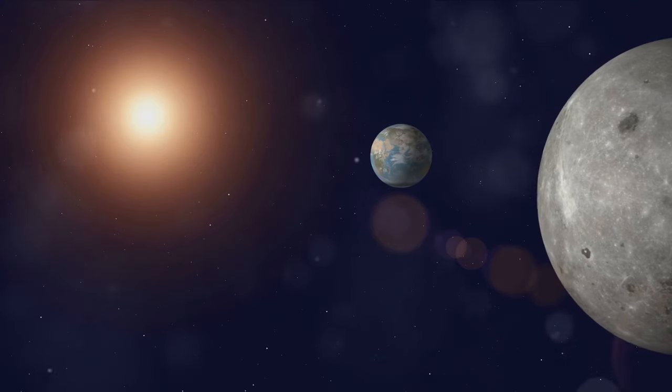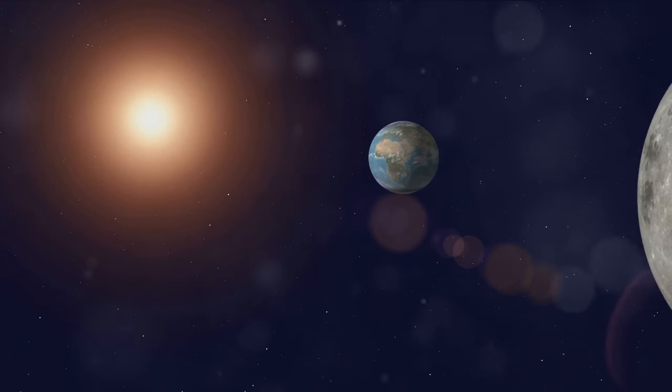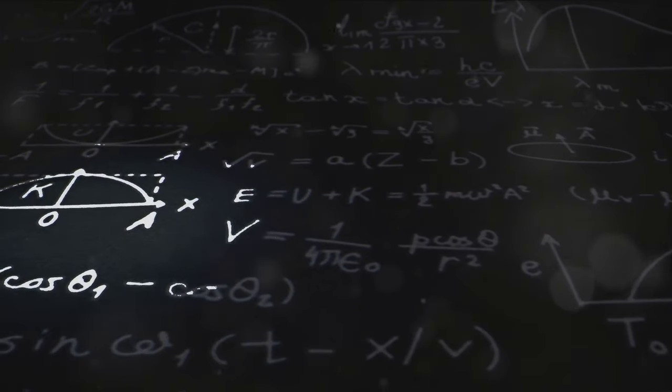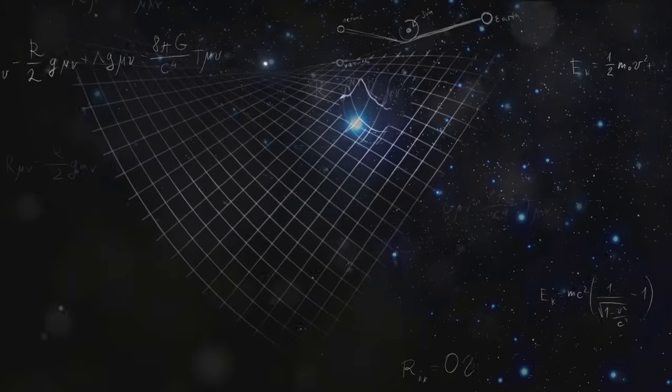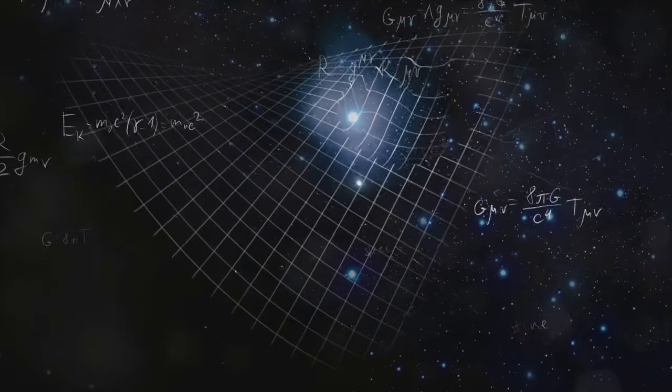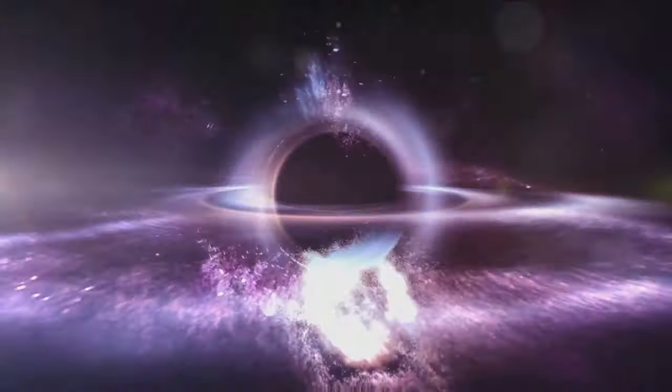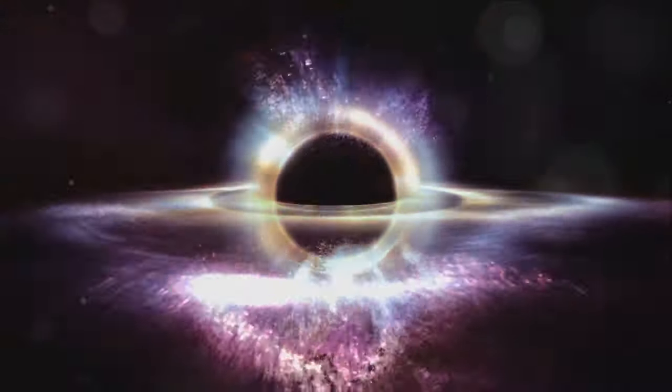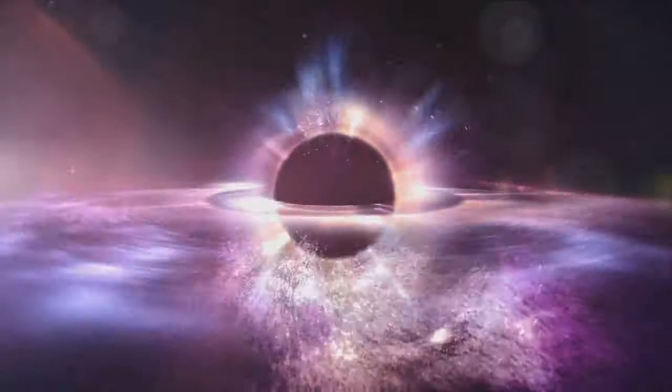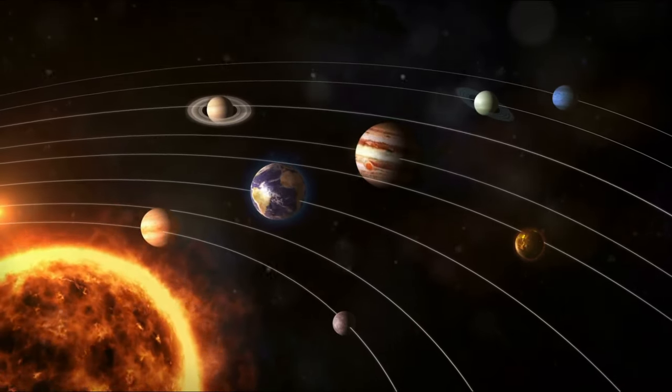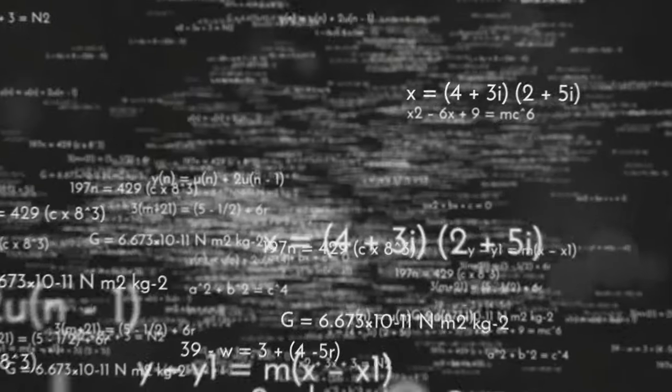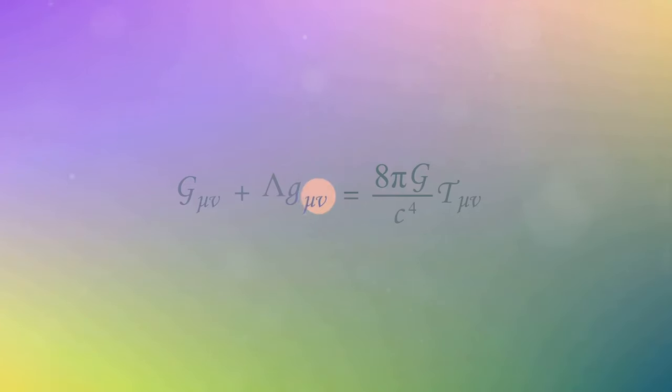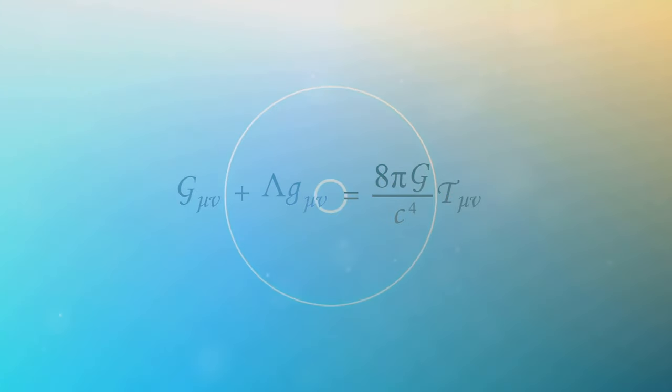Now if you only had two bodies, say just the Earth and the Moon, the math is pretty straightforward. You'd use the laws of gravity and motion, established by Sir Isaac Newton in the 17th century, to calculate their paths. However, things get a lot trickier when you add a third body into the mix. This is because each of the three bodies exerts a gravitational pull on the other two, and each of these pulls is constantly changing based on the body's ever-changing positions. This creates a complex dynamic system that's incredibly difficult to predict.